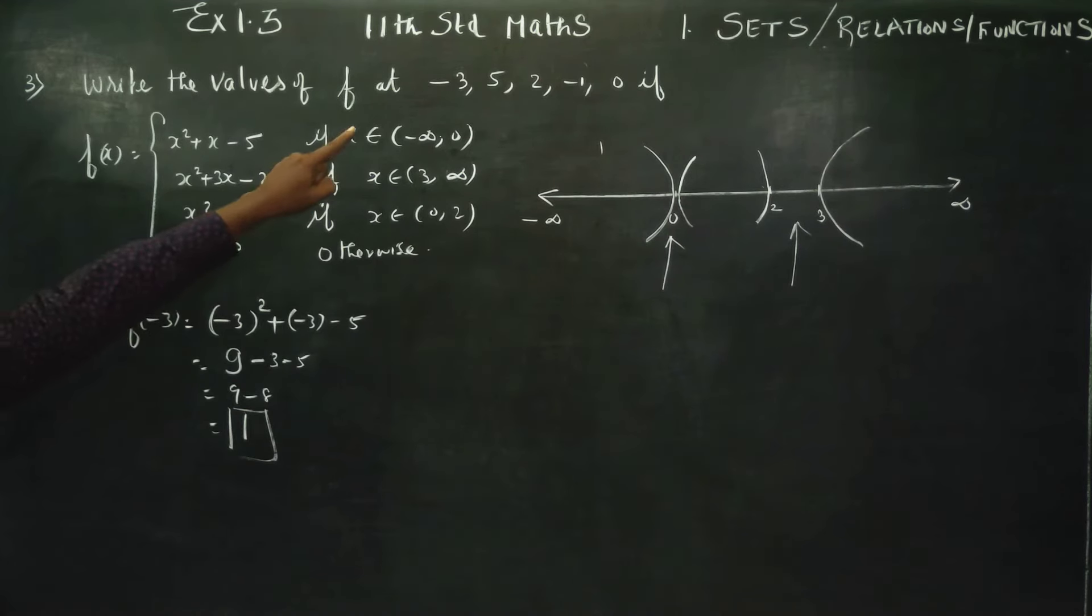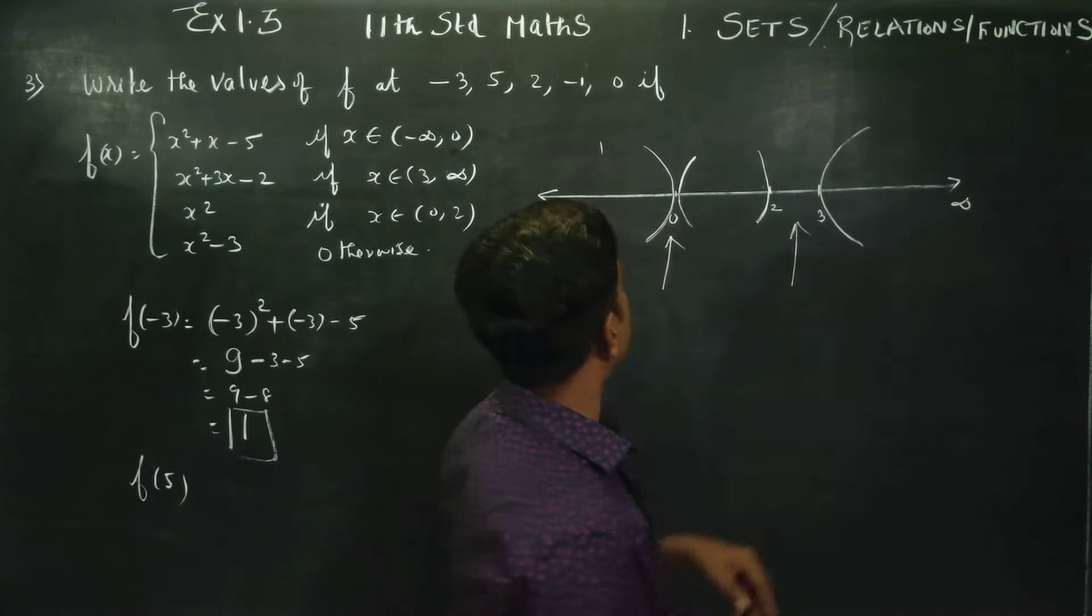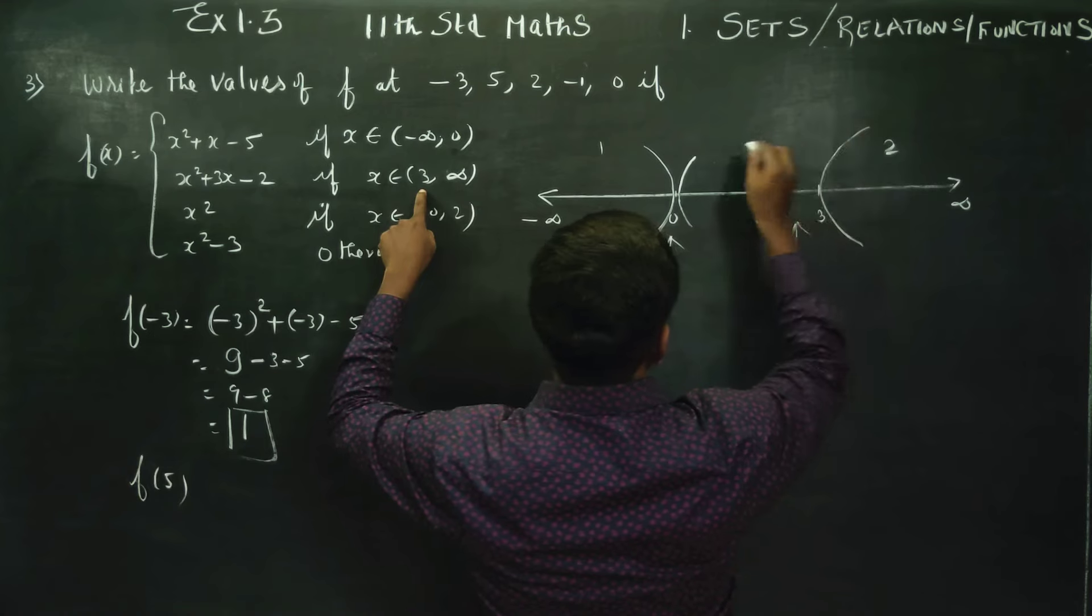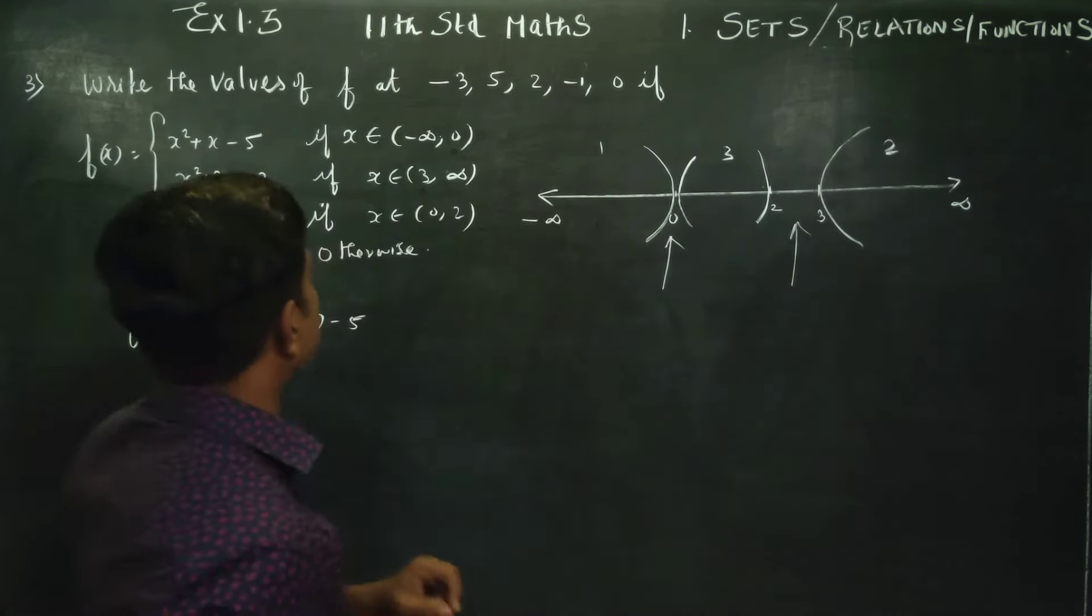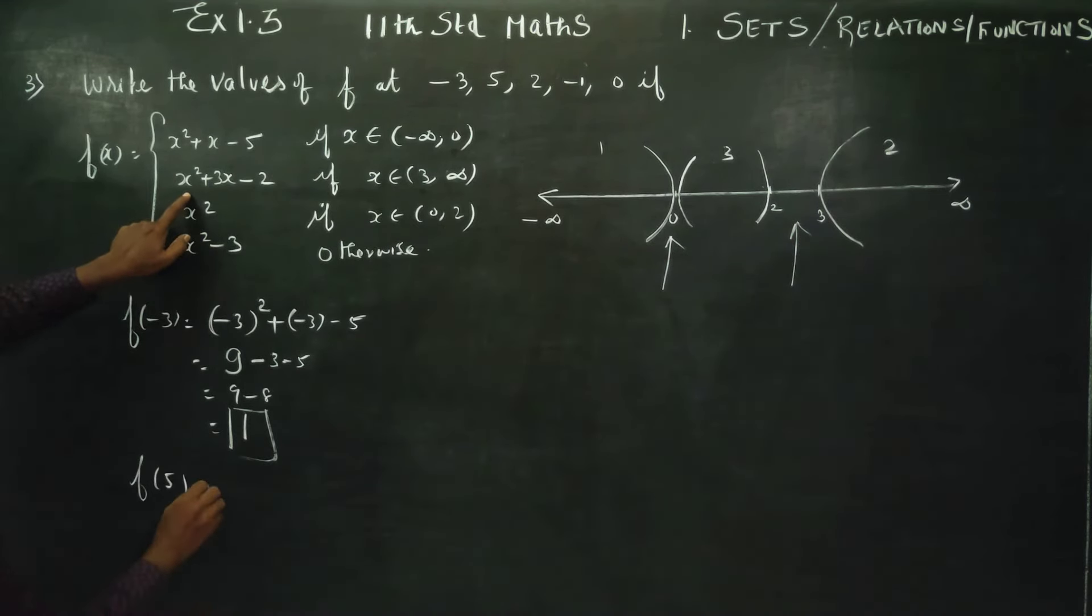Next, f of 5. 5, where are you? 5 is the last, 3, 4, 5, in the range. This is my first and this is my second and this is my third function. So second function I use now, 3 to infinity. f of 5, 5 square, 3 into 5, minus 2. 5 square is 25 plus 15 minus 2, 40 minus 2 is 38. f of 5 is 38.